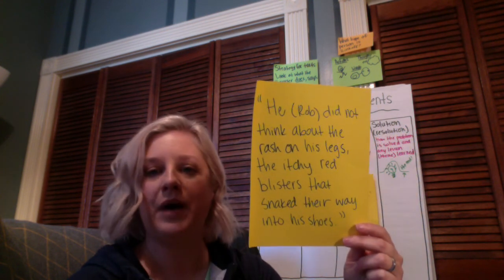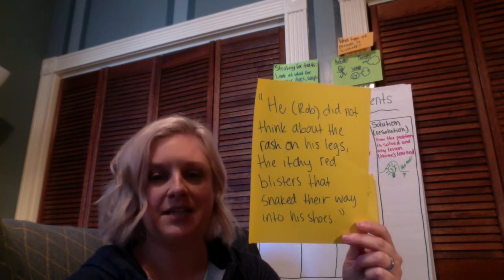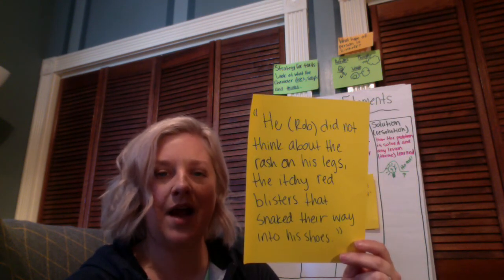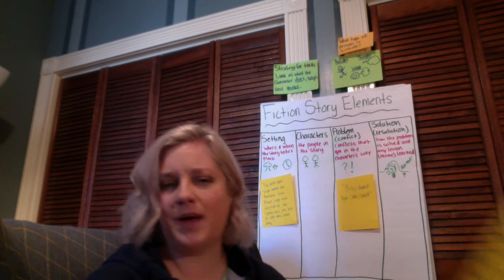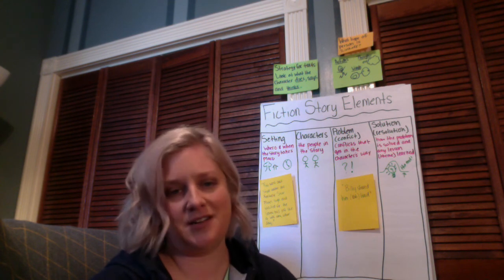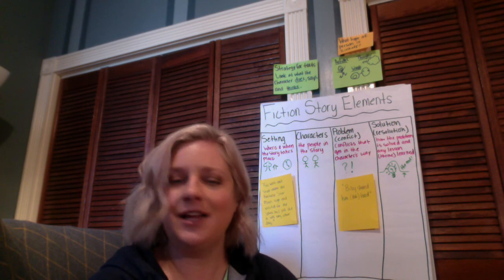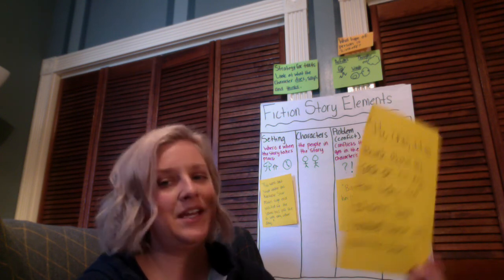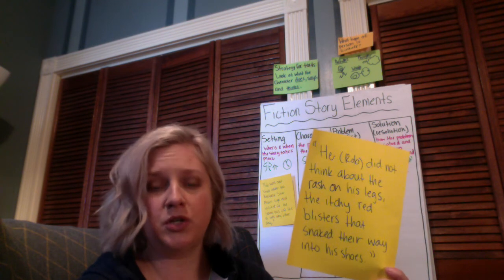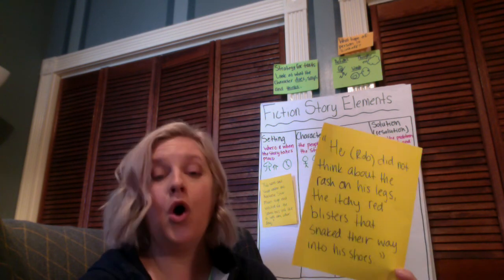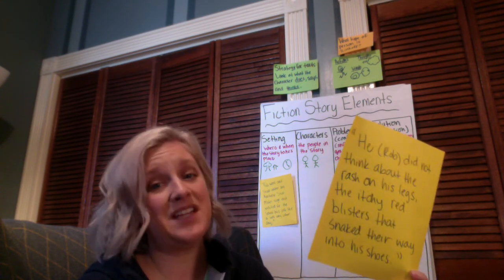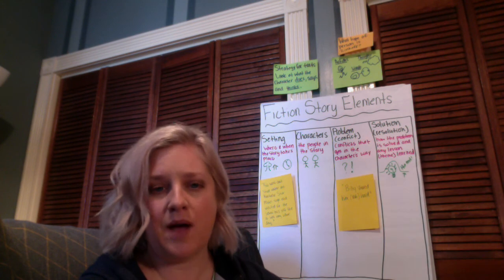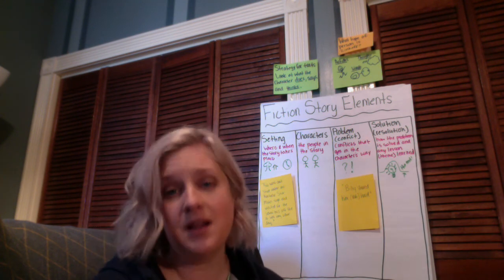How about this sentence from Chapter 1? 'He, Rob, did not think about the rash on his legs, the itchy red blisters that snaked their way into his shoes.' This one's kind of hard. It's describing what Rob looks like and a little about what he feels — he's got these itchy red blisters going up and down his legs. You might wonder: is that character or is that problem? Here's the advice: if it's giving you a good picture of what that character looks like as a person, then it's showing characterization. So I'm going to put that under characters.